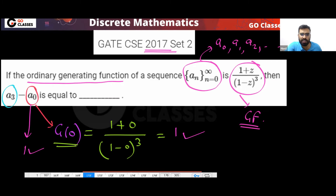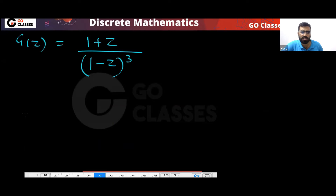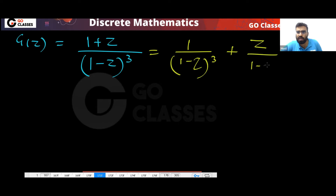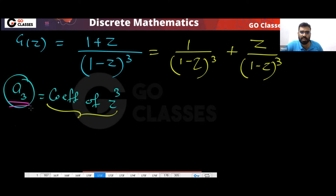We only need a₃. Your generating function is (1+z) divided by (1-z)³. A₃ means the coefficient of z³, because the variable is z here. So a₃ will be the coefficient of z³.